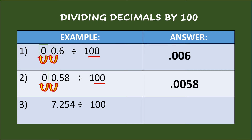Third example: seven and two hundred fifty-four thousandths divided by one hundred. Again, there are two zeros in the divisor, so move the decimal point of the dividend twice to the left and add a zero to fill in the vacant place value. So the answer is seven thousand two hundred fifty-four hundred-thousandths.